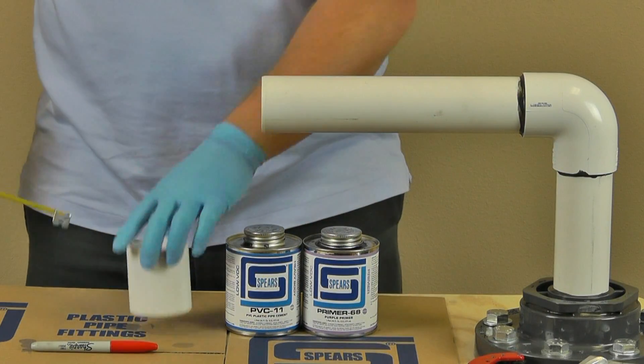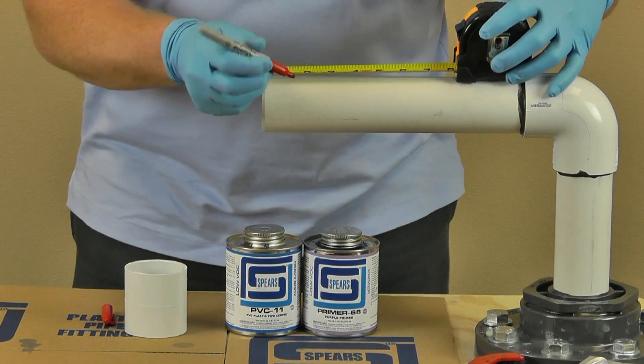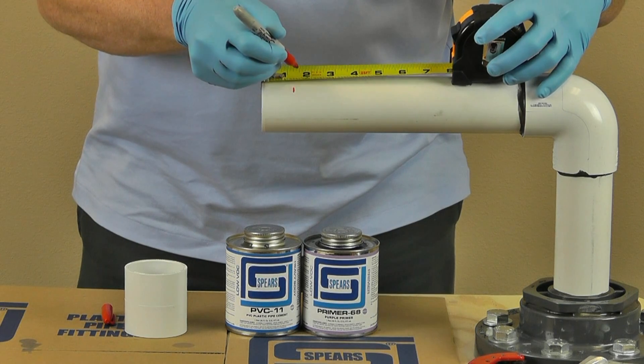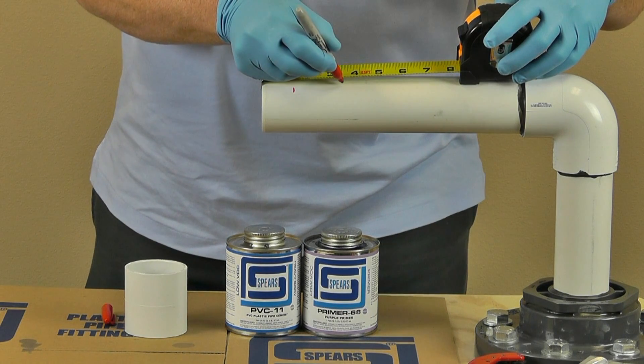Fourth, measure the inside length of the fitting socket. Mark this length on the outside of the pipe and make another mark 2 inches above the first mark. This will indicate how far up the pipe the primer and cement are to be applied and provide visual verification that the pipe has been fully inserted into the socket.